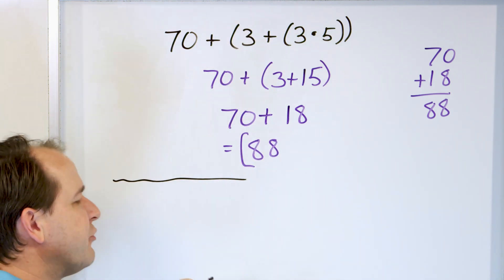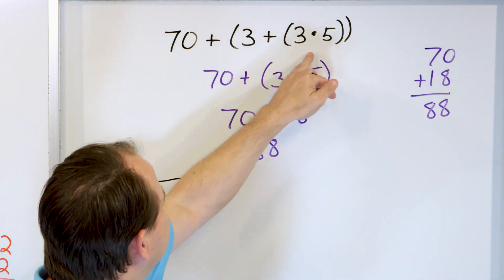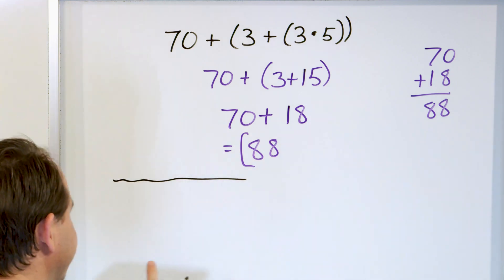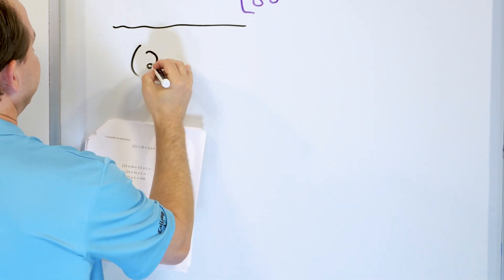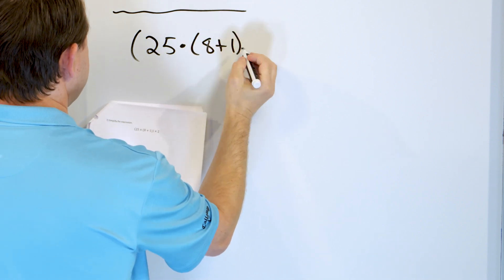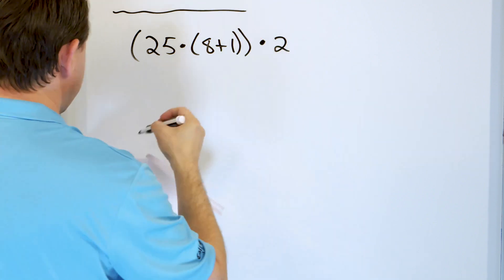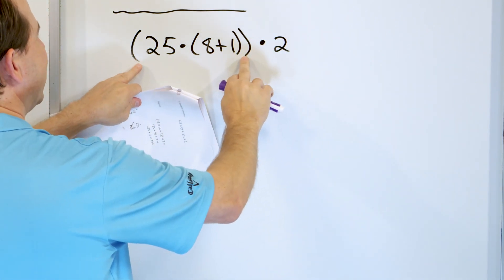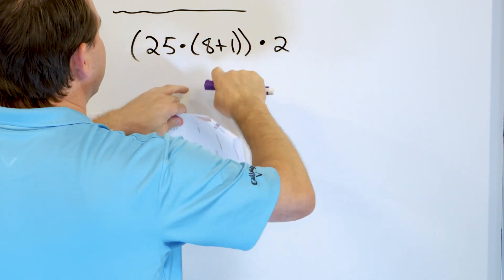One step at a time — that's how we do this. Do not try to do too many things in your head. Students will try to do it all mentally and just make a mistake. So don't do that. Let's take a look at 25 multiplied by, open parentheses, open another parentheses, 8 plus 1, close, close, times 2. We look at the whole thing and say: I have to do what's inside this outer parentheses, but inside there is yet another set, so I have to do that one first.